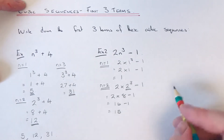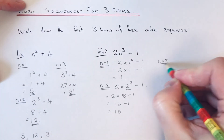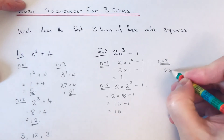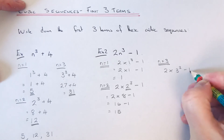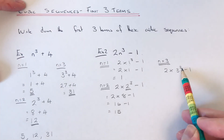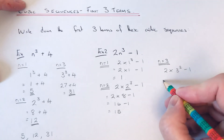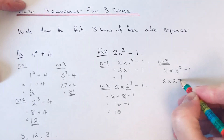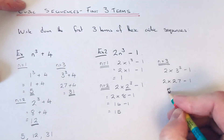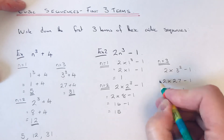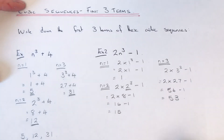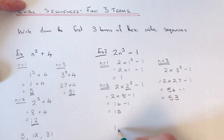To get our third term we substitute n equals 3, so it'll be 2 times 3 cubed, take away 1. 3 cubed is 3 times 3 times 3, which is 27. So it'll be 2 times 27, take away 1 — 2 times 27 is 54, take away 1 gives an answer of 53.